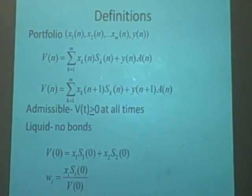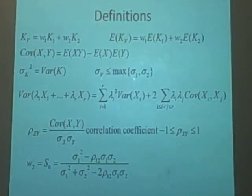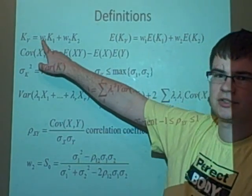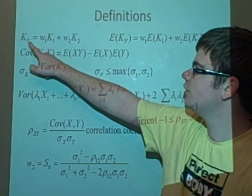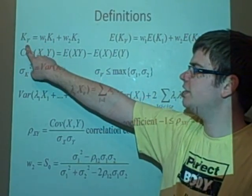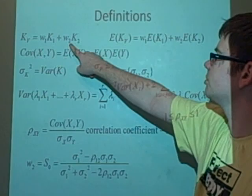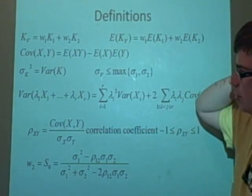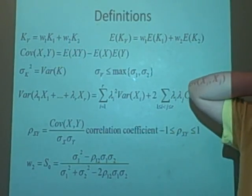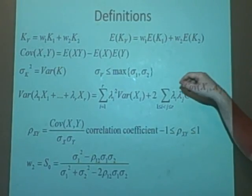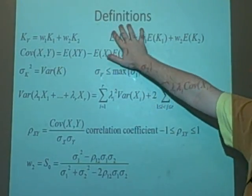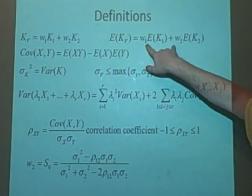More definitions, I'm afraid. This one's showing how the weights can be used with the return. So K_V is equal to w_1 K_1 plus w_2 K_2. You might want to look at some of the previous videos, which there'll be links all over this thing, I think. We can use expectation with these, so the weights aren't really affected.